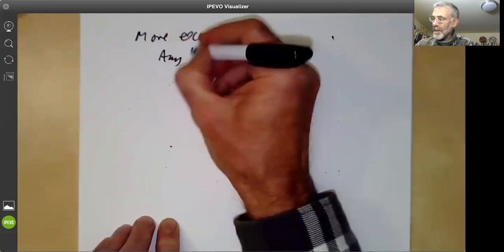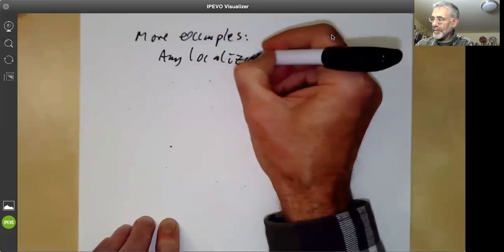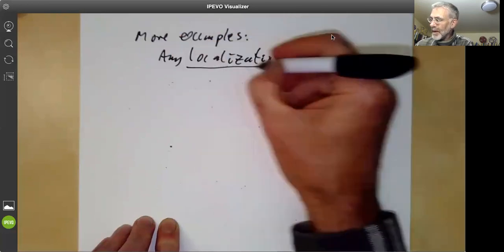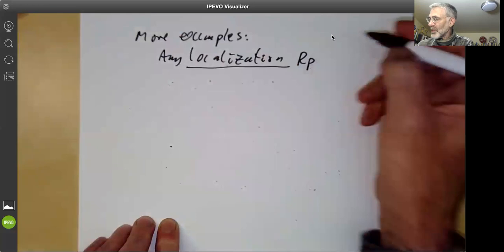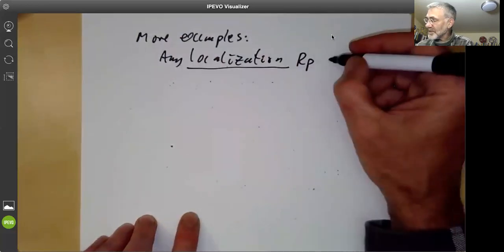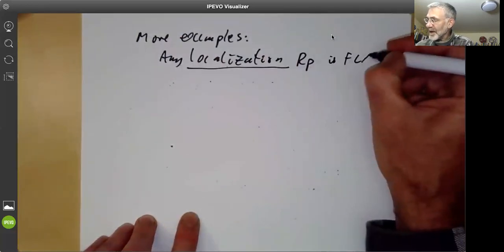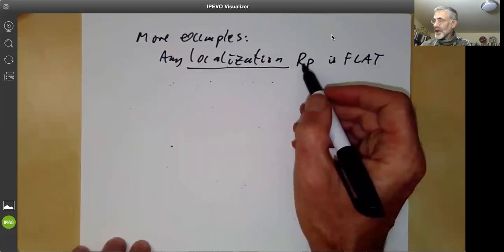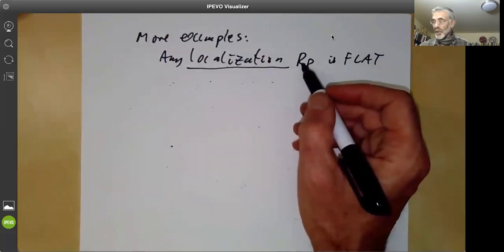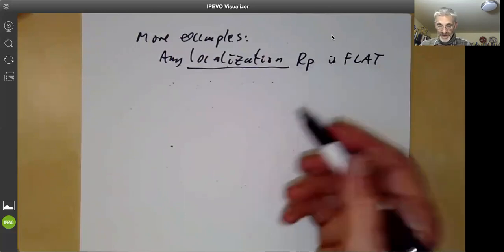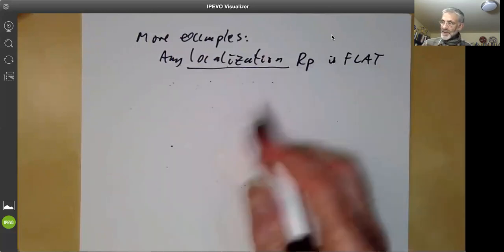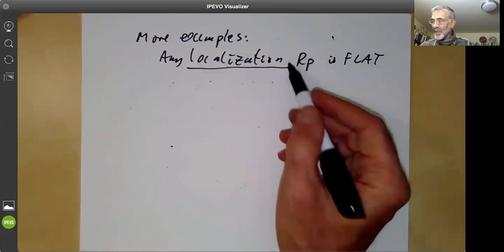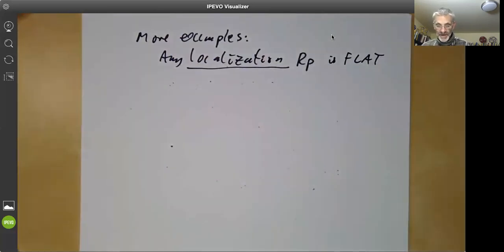Any localization rp at a prime or at any multiplicative subset is flat. And localizations of a ring are in general not projective or free or whatever. So this shows why we're interested in flat modules. There are plenty of flat modules which don't satisfy any of the stronger conditions.